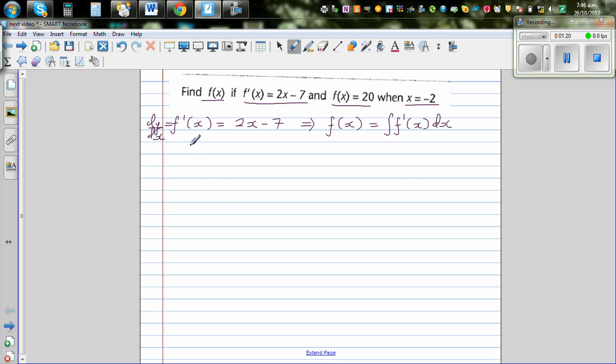Therefore, f(x) is equal to integration of 2x, I'll write 2x to the power 1 and 7, I'm going to write as 7x to the power 0. Now in integrating polynomials, you increase the power of the variable by 1, so this is 2x squared over 2 minus 7x raised to 1 over 1 plus c.